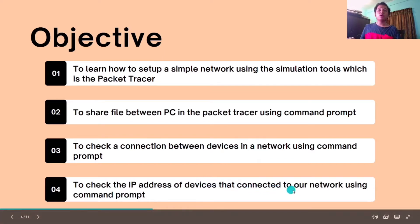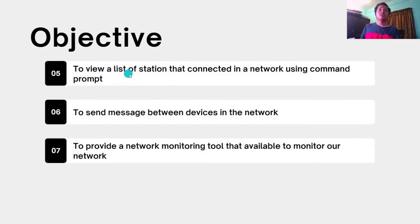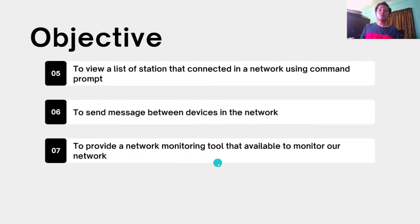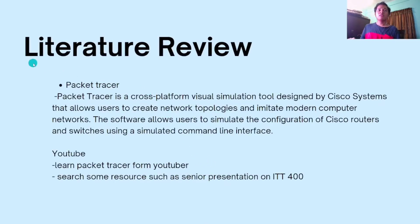Fourth, to check the IP address of devices connected to our network using the command prompt. Fifth, to view a list of stations connected in a network using the command prompt. Sixth, to send messages between devices in the network. And lastly, to provide a network monitoring tool available to monitor our network.